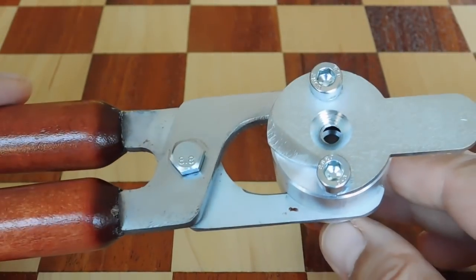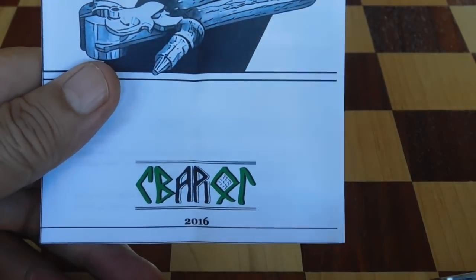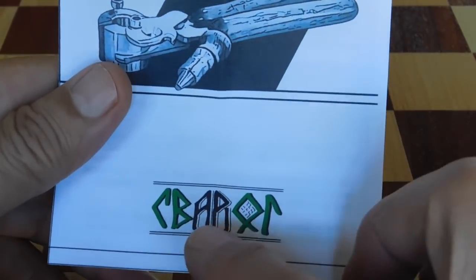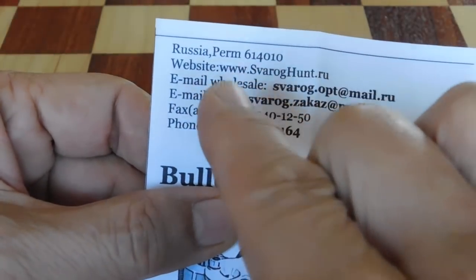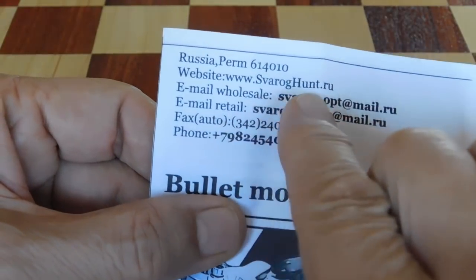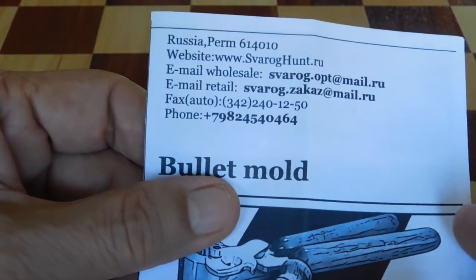Now, the directions are in Russian translated into English. So, the instruction sheet was written in 2016 and you see it's basically Russian but they do have an address and website, email and they actually have a phone number here if you want to contact them.